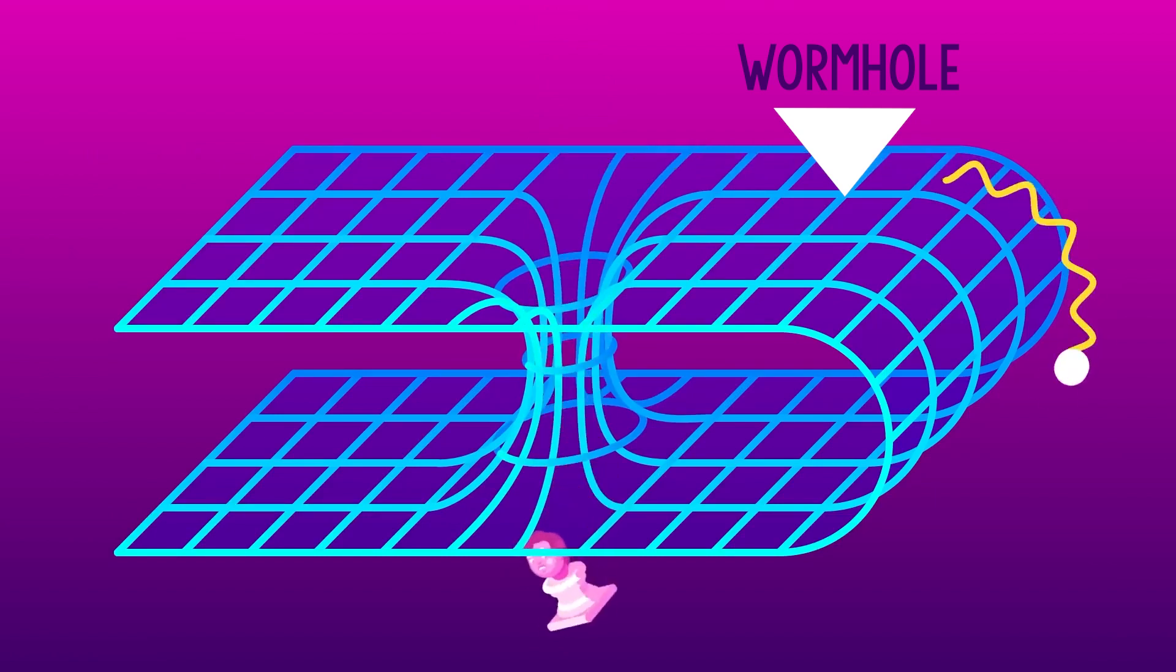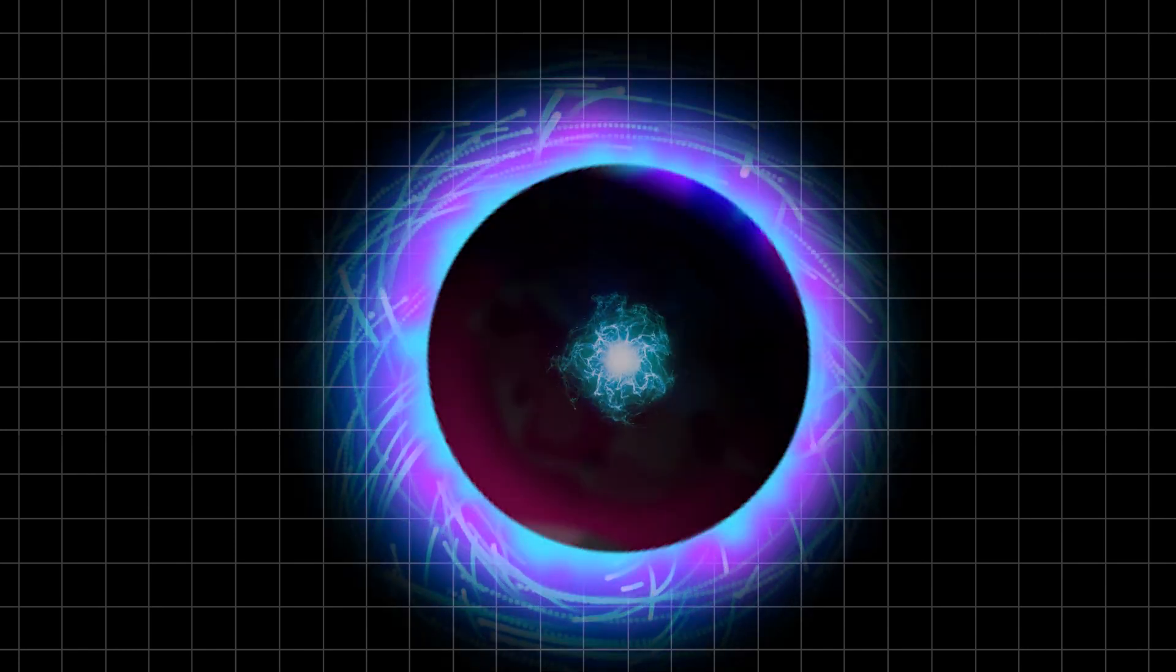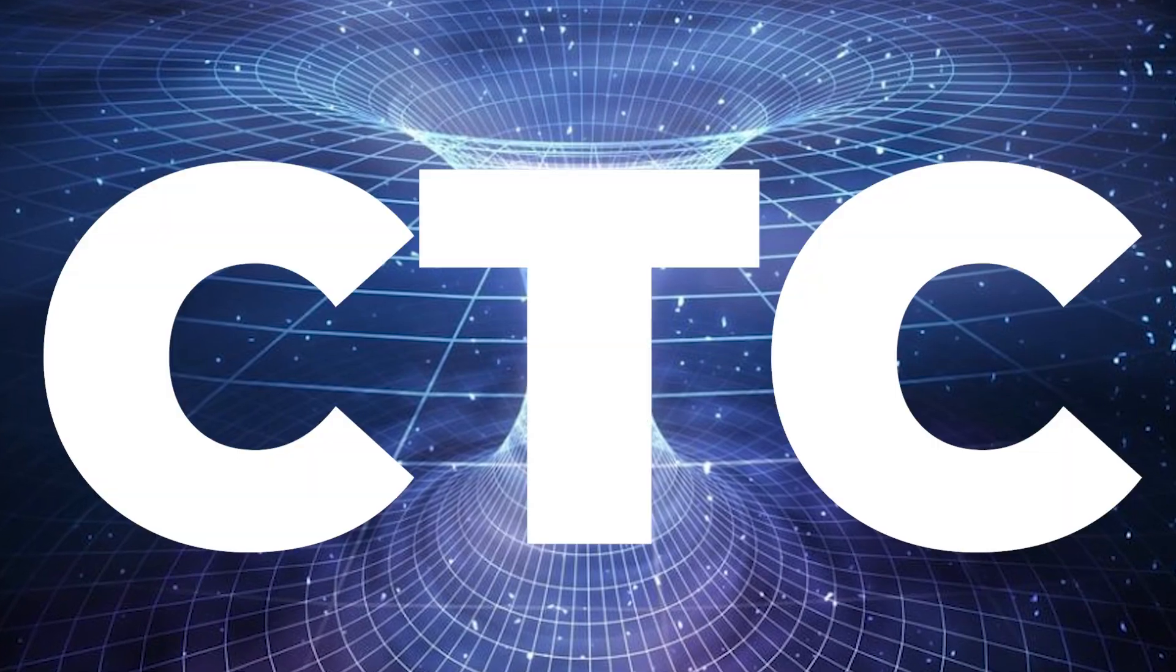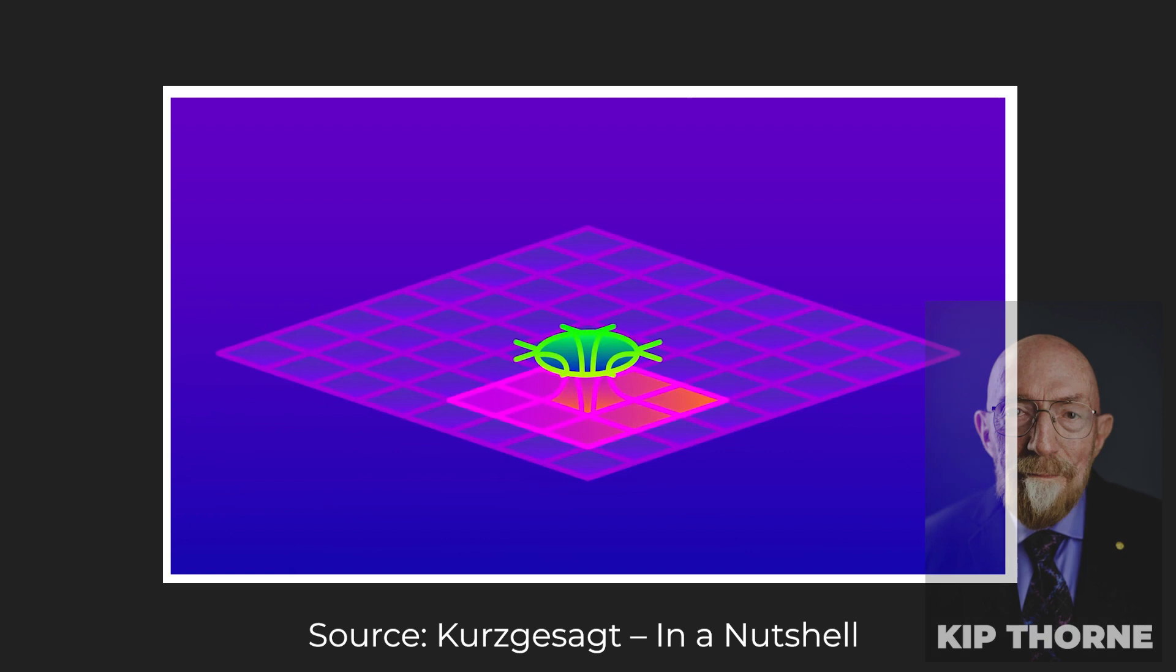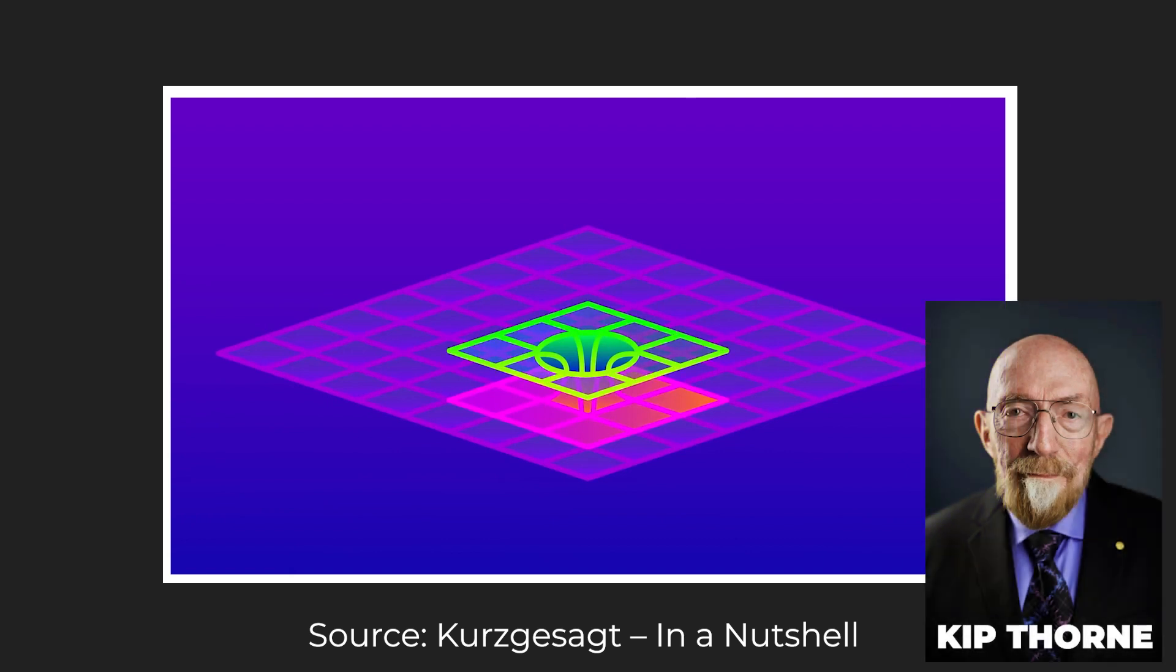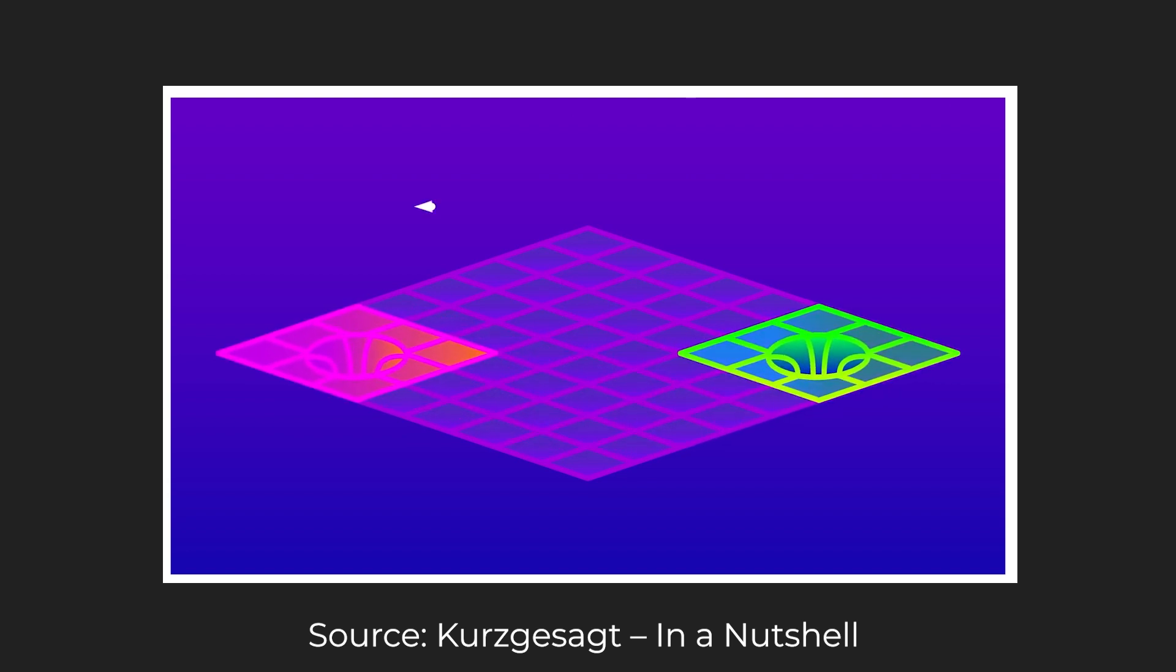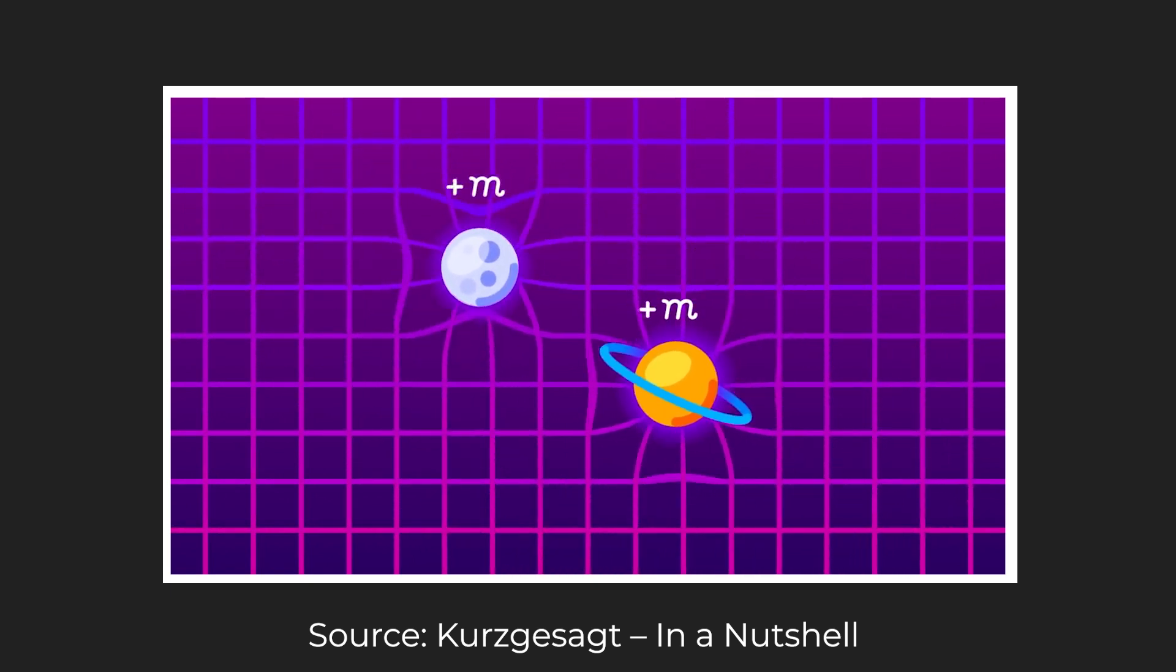Perhaps a spinning black hole can generate so much gravitational field that it bends the curvature of the space-time back on itself. It would create a closed time-like curve known as CTC. Nobel prize-winning physicist Kip Thorne believes that small wormholes get created and they disappear in space all the time. But they are really small, smaller than atoms. If we want to travel through them, it would take a lot of energy to expand them.